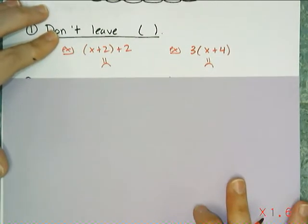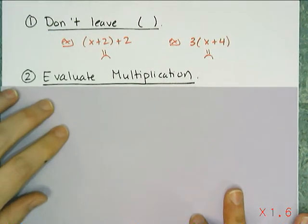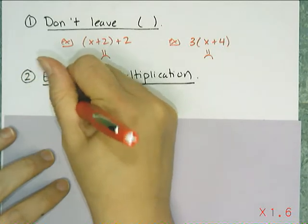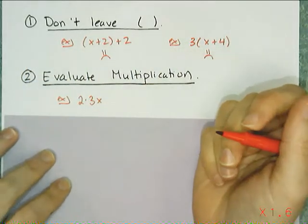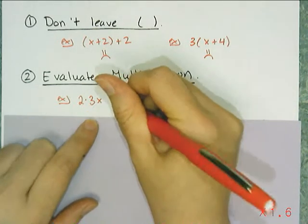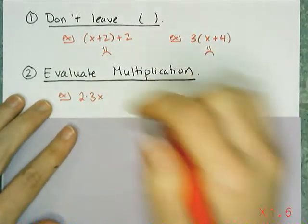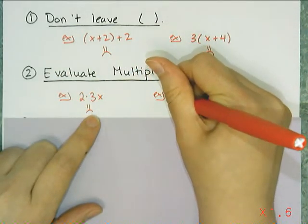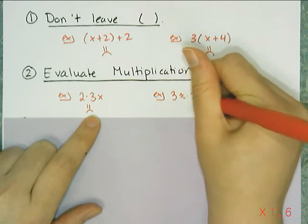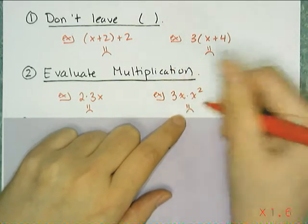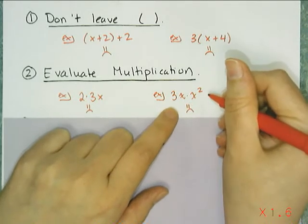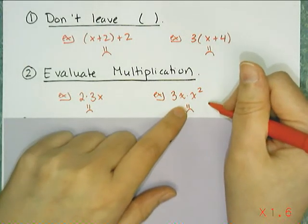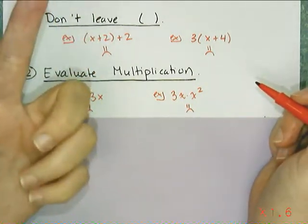Alright, so the second thing we need to talk about is the evaluation of multiplication. It must occur, so you have to evaluate your multiplication. So I don't want to see an expression like this, because I can multiply 2 times 3, and I can get 6. So this is a frowny face kind of answer, I don't want to leave that. And if I look at 3 times x times x squared, this is another example of something that I don't want to leave, because x times x squared can be simplified to x cubed if I think about the definition of exponents.